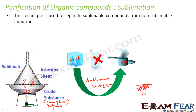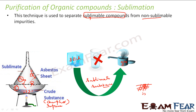When you heat the impure sublimable organic compound, it converts to gas and passes through the asbestos sheet into the second chamber, where it cools down and converts back to solid. This gives us a very simple two-chamber setup: chamber one where you heat the compound, and chamber two where the purified solid collects. Impurities like carbon, coal, or iron do not evaporate and remain in chamber one.